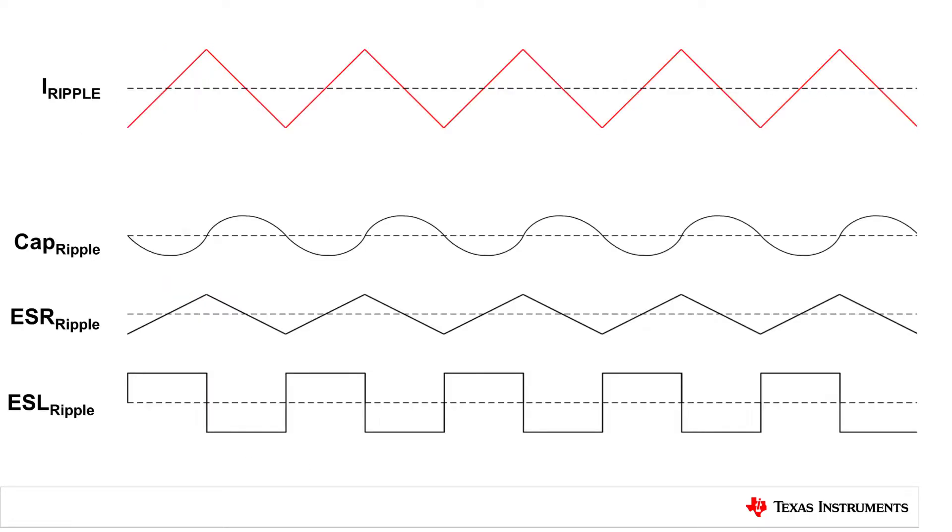In conclusion, ESR for space grade designs will be the biggest concern and can be reduced with lower inductor ripple current or more output capacitors in parallel. Multi-phase converters can help reduce this ripple even further.